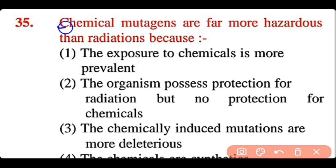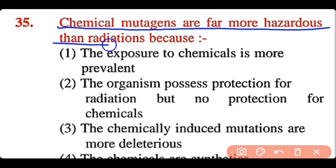Question 35: Chemical mutagens are far more hazardous than radiation because the organism possesses protection for radiation but no protection for chemicals, or the chemically induced mutations are more deleterious.